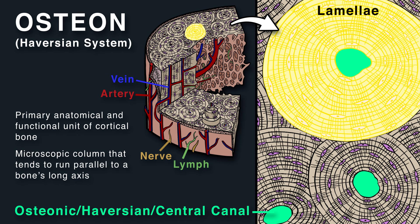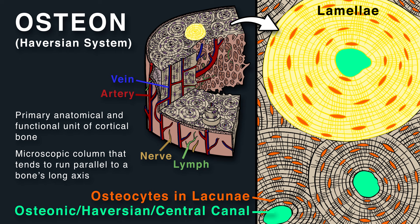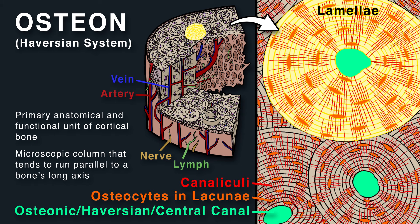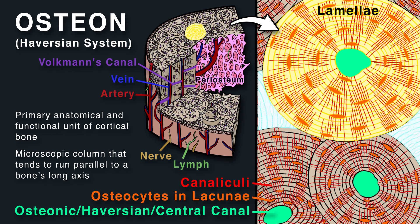Between the lamellae, you have bone cells called osteocytes in small oblong spaces called lacunae. Canaliculi are tiny passageways that radiate from the Haversian canal to the lacunae. Transverse vessels called Volkmann's canals run perpendicular to the osteons and connect adjacent osteons. They also connect blood vessels within osteons to the periosteum. Osteons are densely packed, and spaces between adjacent osteons are filled with interstitial lamellae, which are layers of bone that are generally remnants of previous osteons.